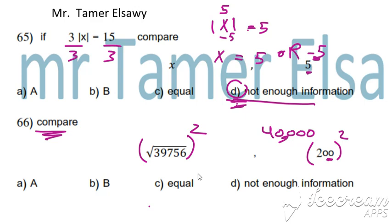Root of square root have square cancel equals 39,756 without root. Which is bigger, 40,000 or 39,000? Good, 40,000 is B.